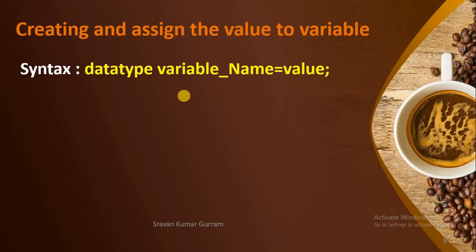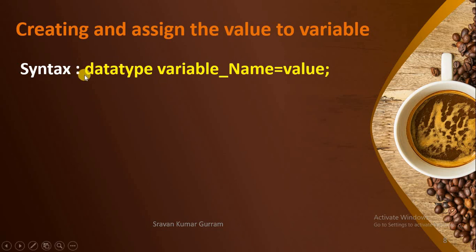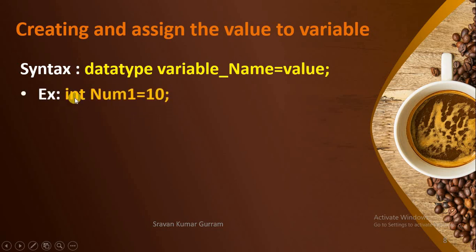How do we create and assign a value to a variable? The syntax is: data type, space, variable name, assignment operator, value — the value you want to store in that variable. For example, 'int' is the data type. Whenever you want to store numerical values in your variable, you must write the data type as int — you should not write the complete word 'integer'. In this case, number1 is the integer type variable, and I am assigning the integer value 10.